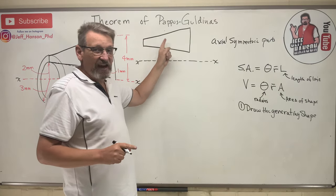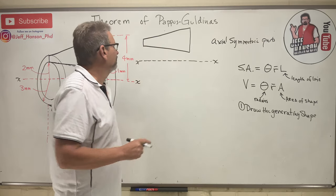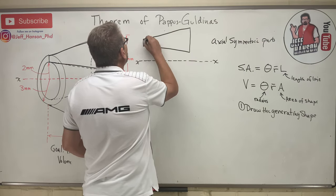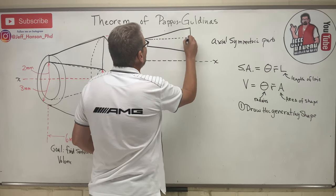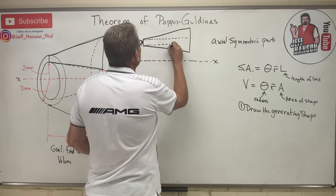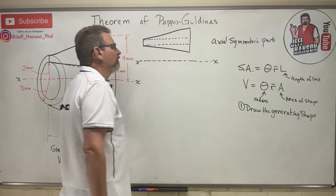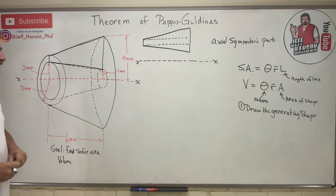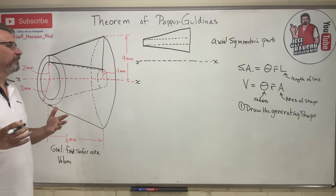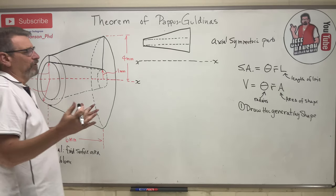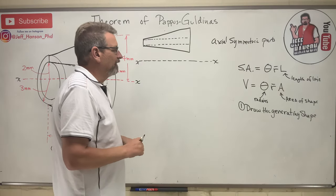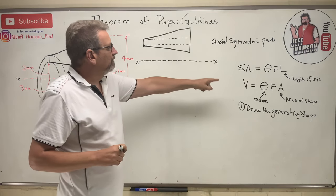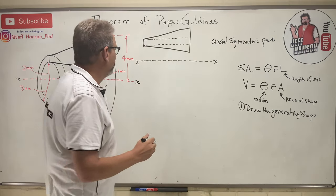You have to be able to visualize that — it's everything in this method. What we have here is essentially a small skinny rectangle with two triangles attached — one on top and one on the bottom. Let's do volume first, as I think it's the easiest.